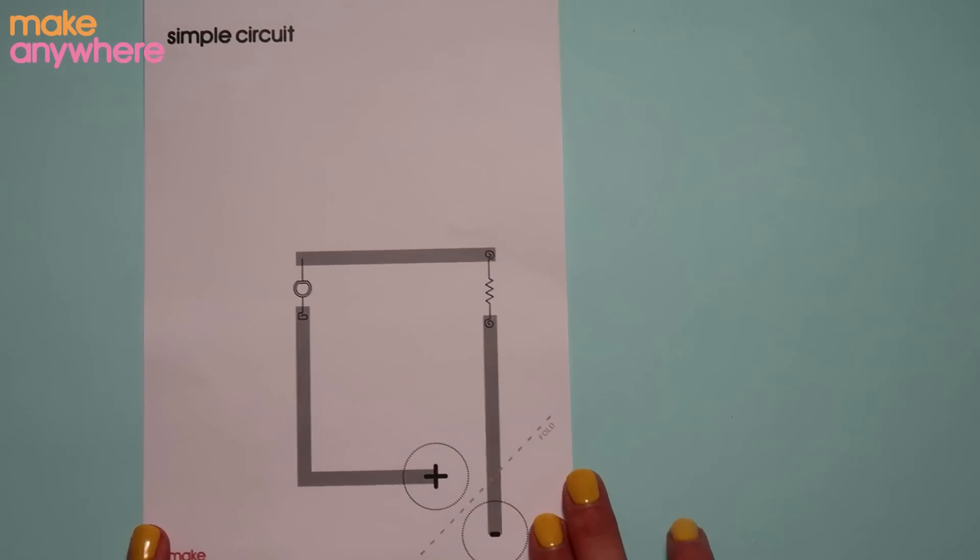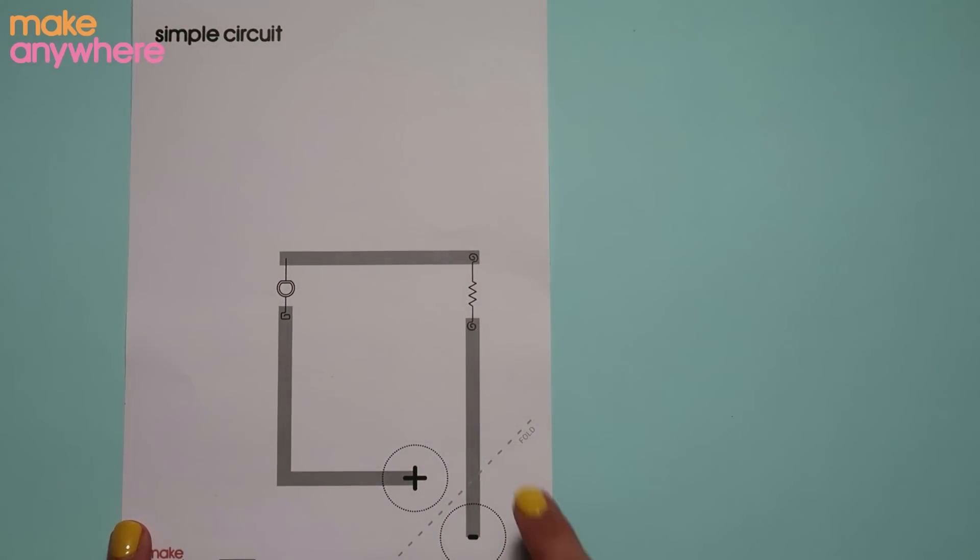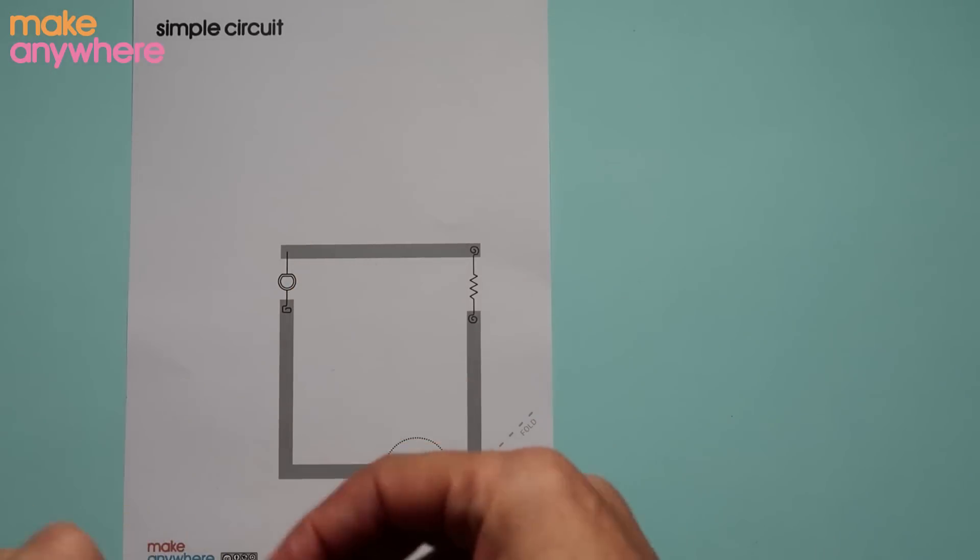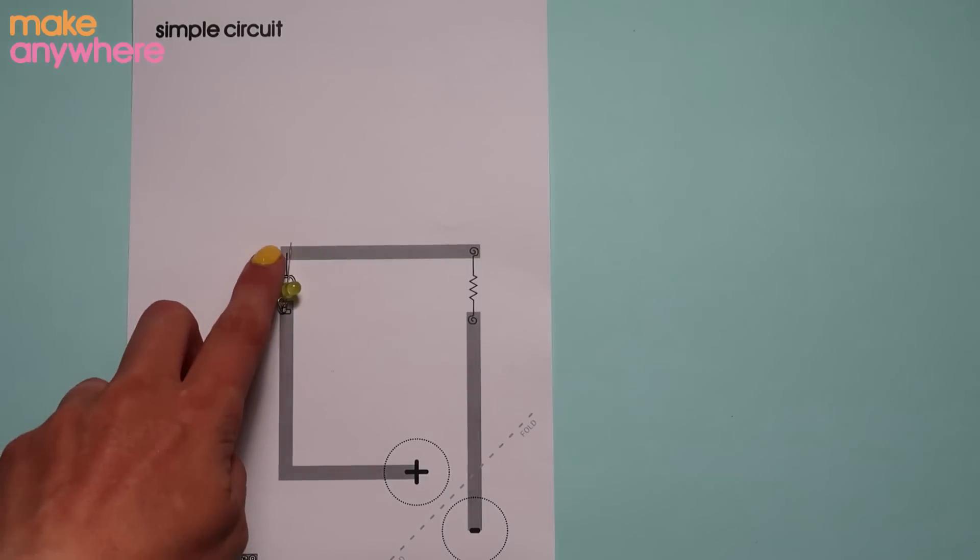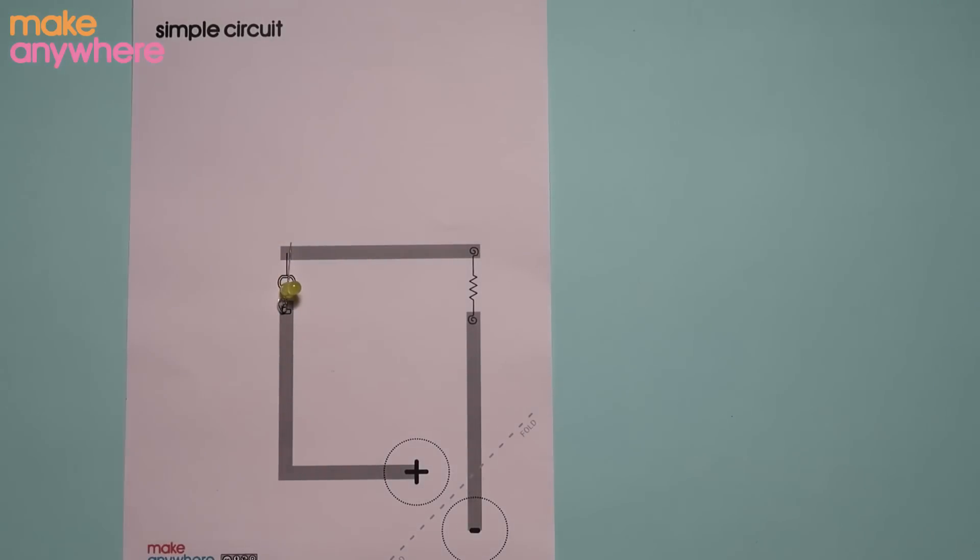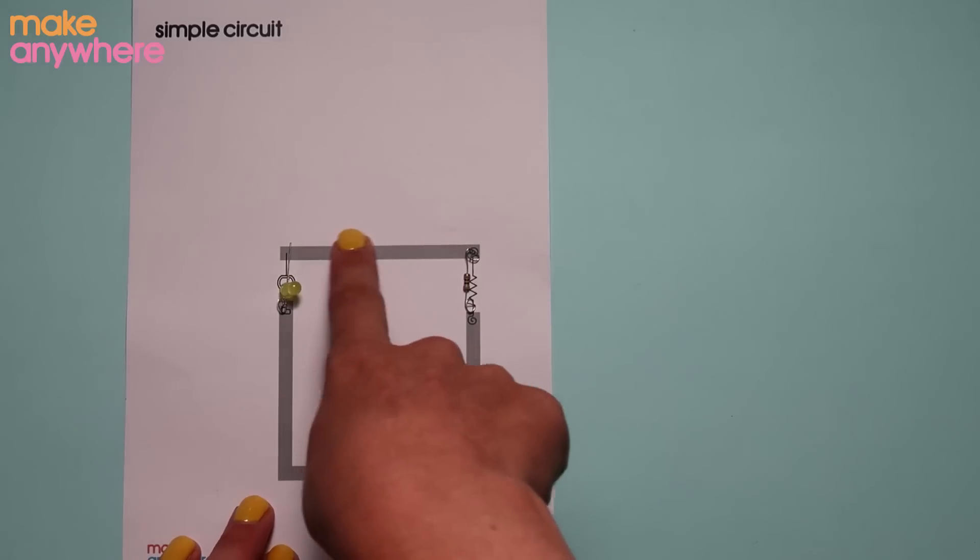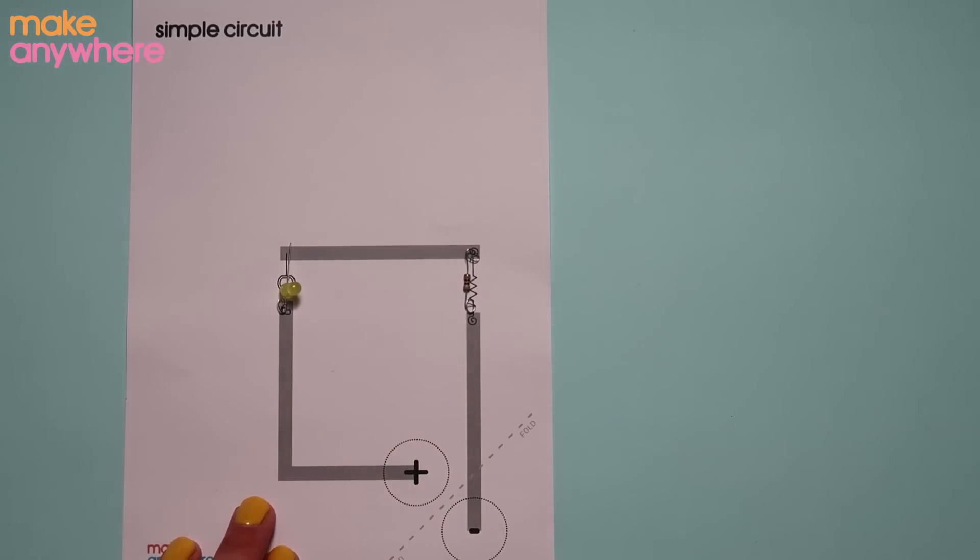So grab your template, there's a link below for you to be able to download this free template. Your LED is going to go over this icon here, the circle on this side and your negative or the straight on this side and your resistor goes on this side. These grey lines are where your copper tape is going to go. So let's do that part.